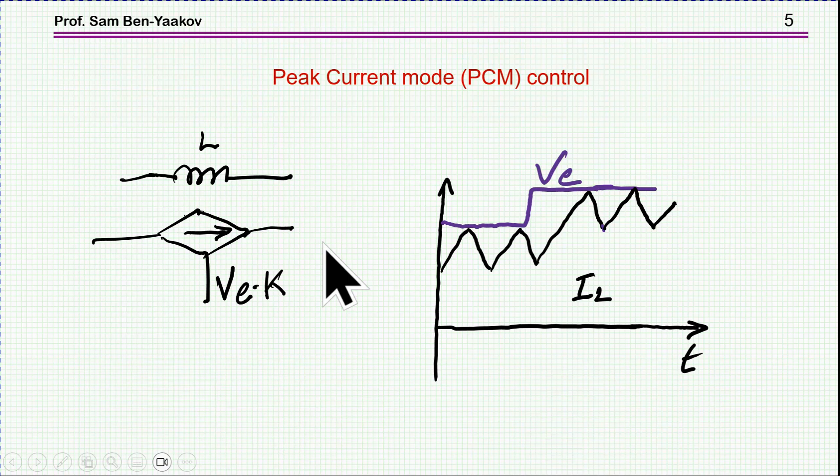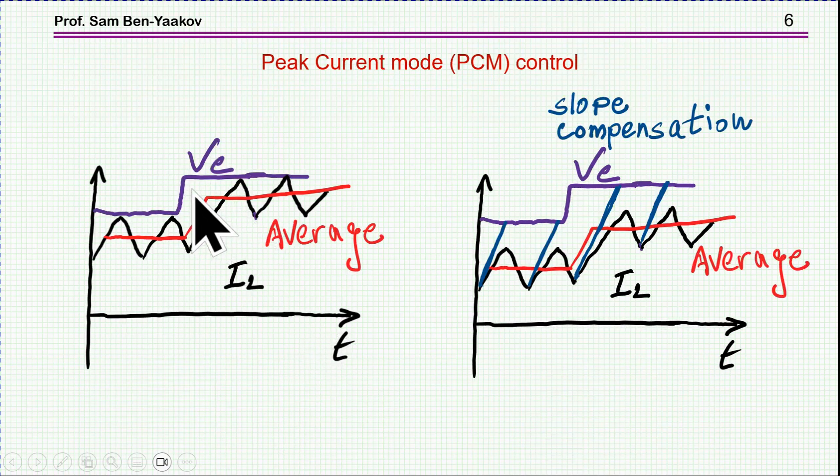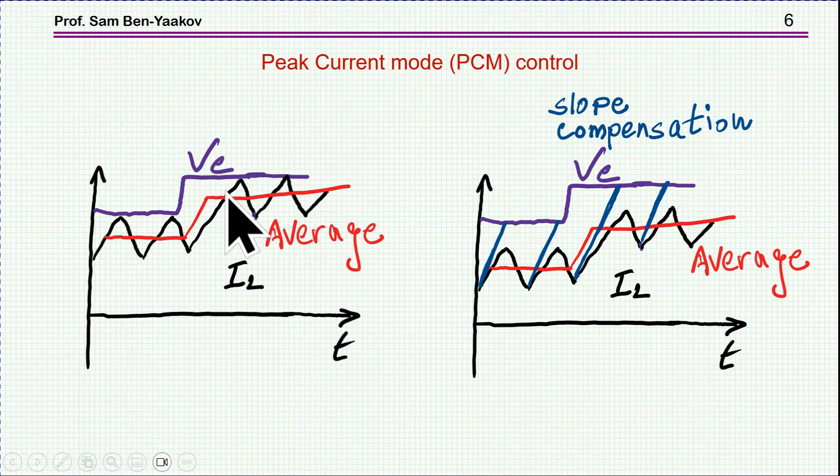However, the current really does not follow V sub E. The peak current is following, and there is a difference, and the average current, of course, is here, midway. Not only that, if the operation is with a duty cycle above 0.5, then we need slope compensation. So, therefore, we have now a slope here, which is the original inductor plus the slope compensation, and then the distance between V sub E and the average current is even farther away. Now, in this approach that I'm presenting here, I'm actually accounting for this difference and implementing it in an average model.